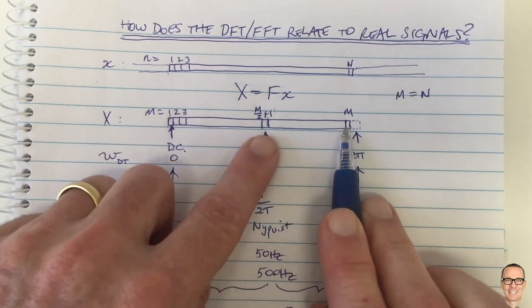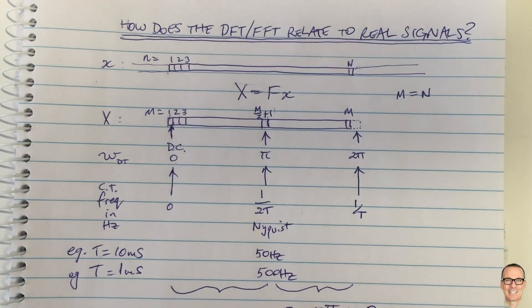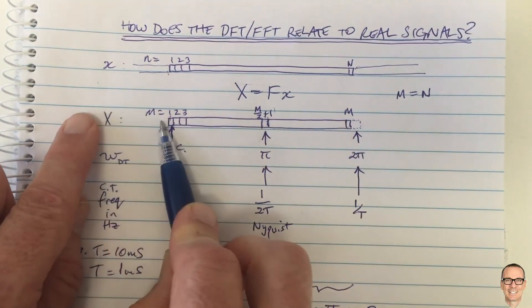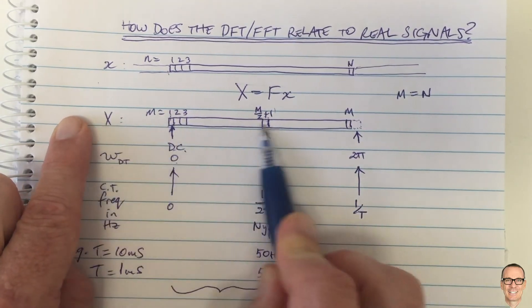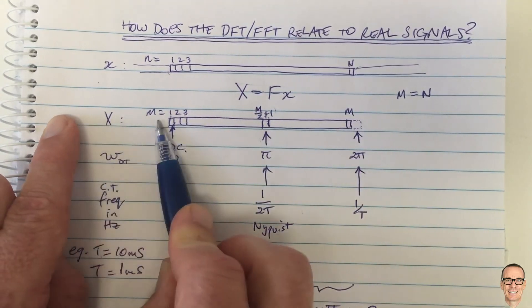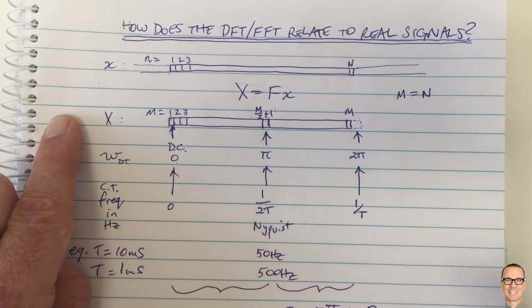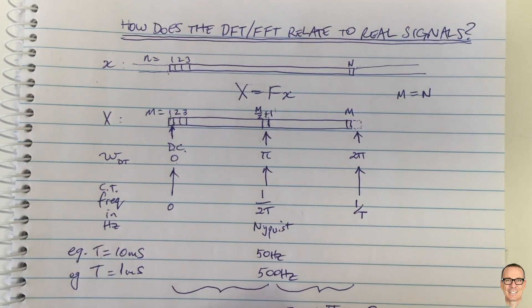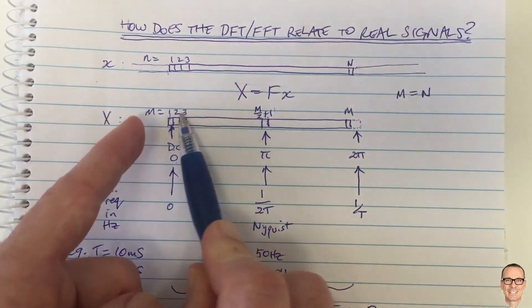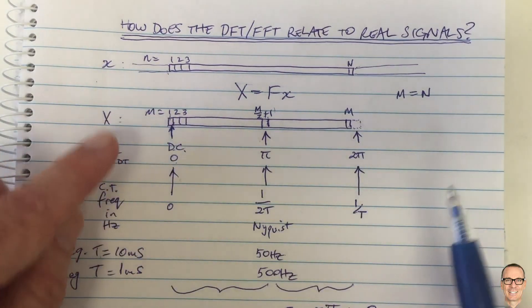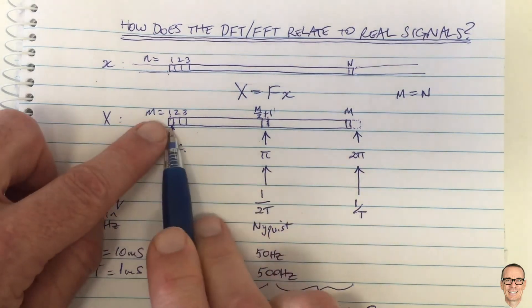Because the upper half of the DFT vector corresponds to the negative frequencies (−π to 0), it is sometimes plotted on the left-hand side. In MATLAB, the function fftshift does exactly this — it shifts the FFT output so that the zero frequency DC component appears in the middle of the vector. But the straight DFT or FFT function uses the formulation where DC is at the first element.